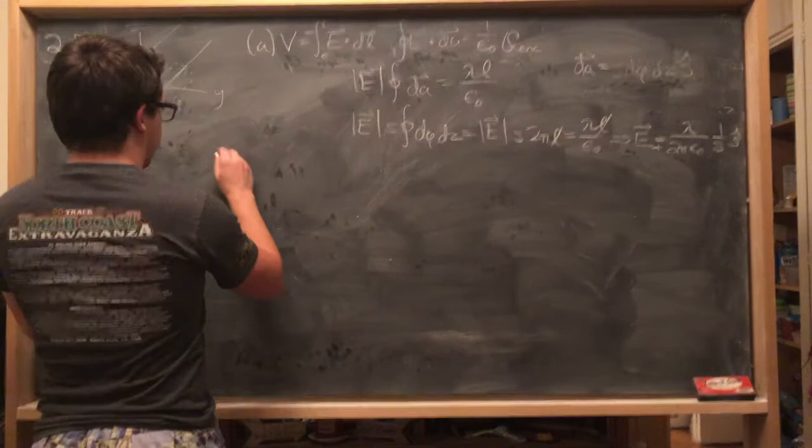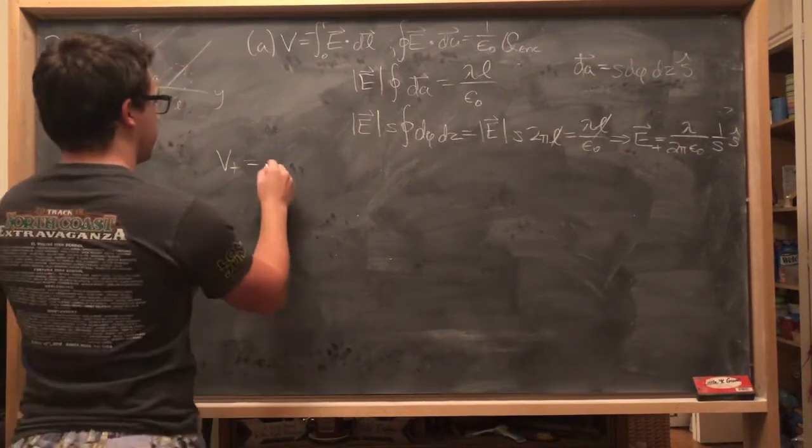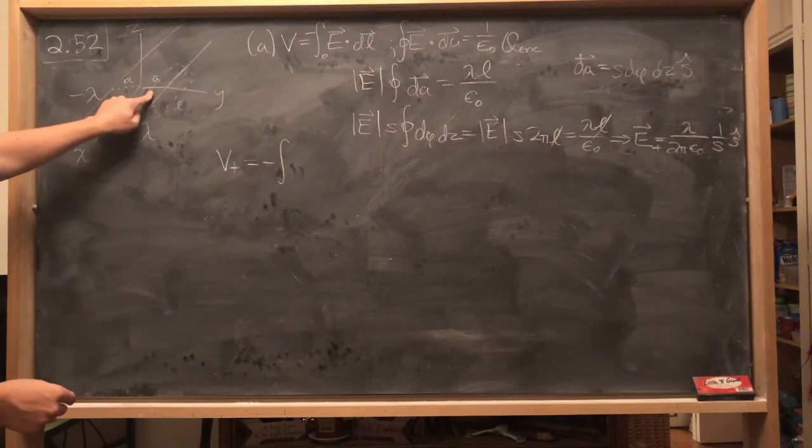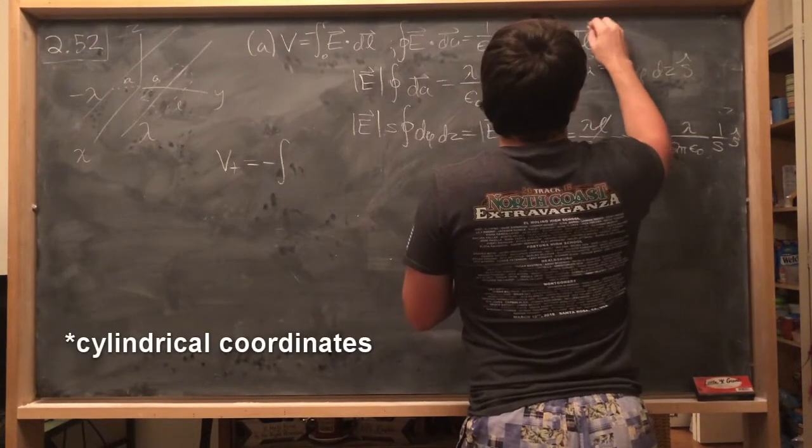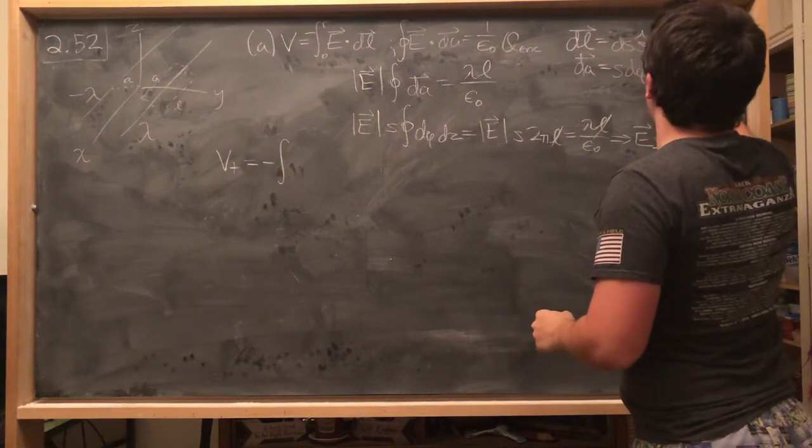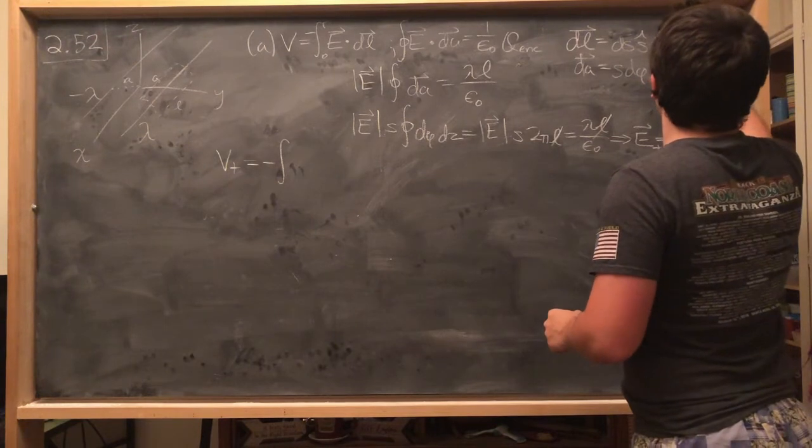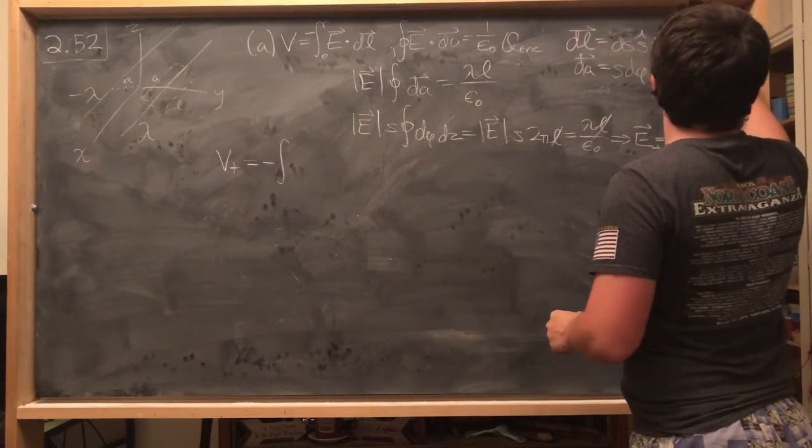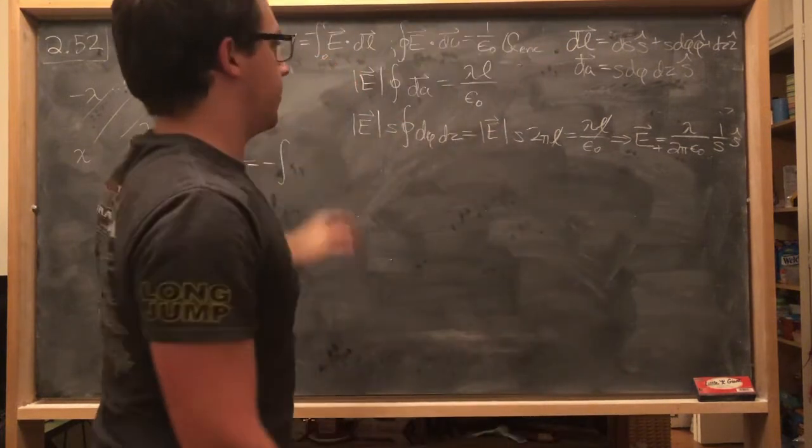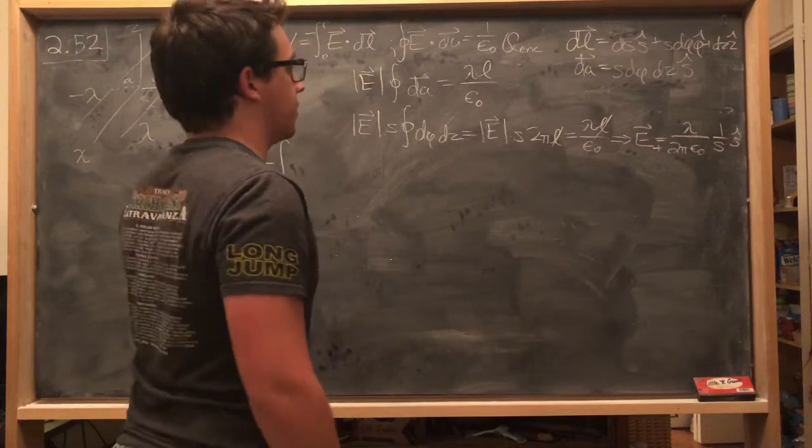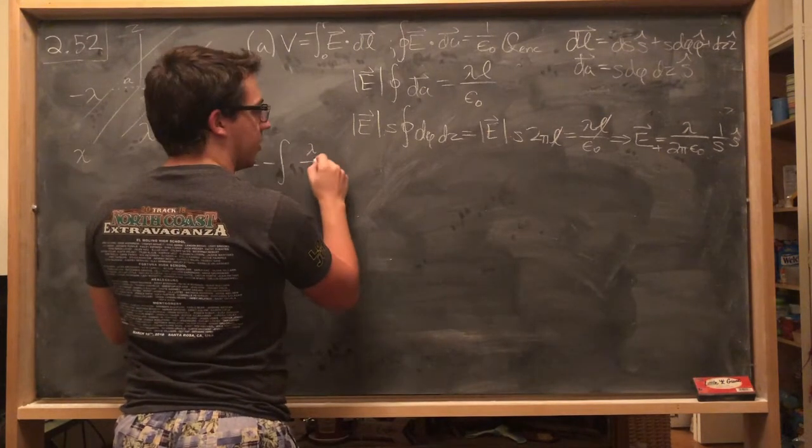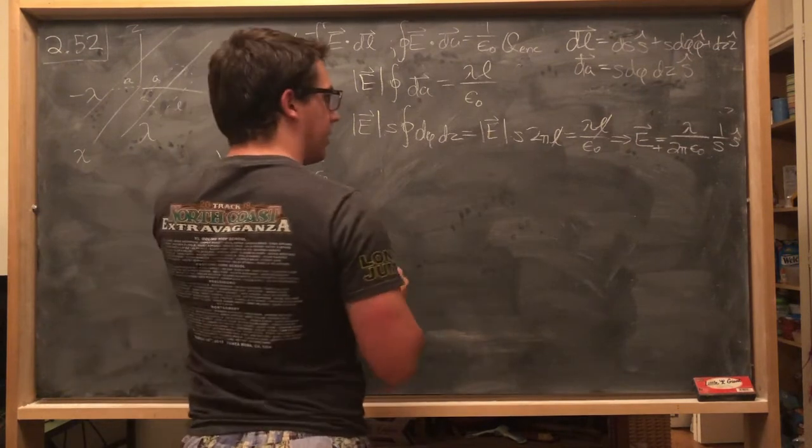So our V for the plus lambda is going to be the integral from the origin. Our dL in cylindrical coordinates is dS S-hat plus S d phi phi-hat plus dZ Z-hat. And since we're dotting this dL with the electric field, which again is only going to be in the S-hat direction, then all we're going to end up with is, in this case, lambda over 2 pi epsilon naught dS over S.